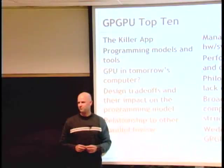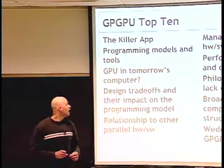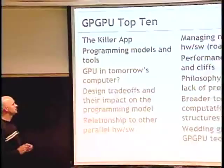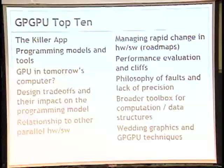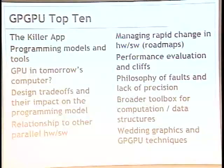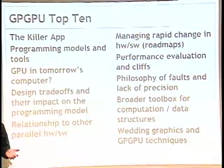Problem number two is programming models and tools. We talked about the stream programming model and SIMT as a way to think about doing computation. What does the parallel programming model look like? That's by no means established. And then there are tools — compilers that help you do auto-parallelization or optimize your code. Very important problems.